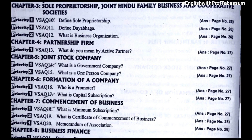Chapter 3, sole proprietorship, joint Hindu family business, and cooperative societies: define sole proprietorship; define dayabhaga; what is business organization. Chapter 4, partnership firm: what do you mean by active partner. Chapter 5, joint stock company: what is a government company; what is a person company. Chapter 6, formation of a company: who is a promoter; what is capital subscription.